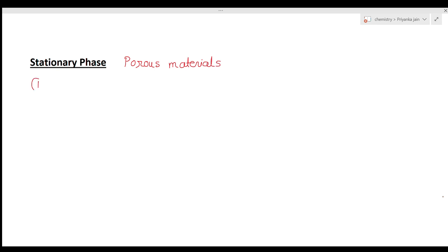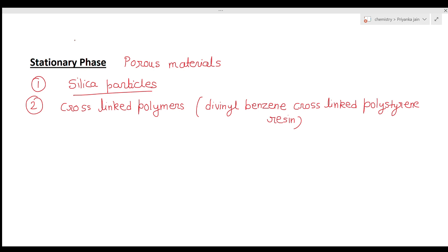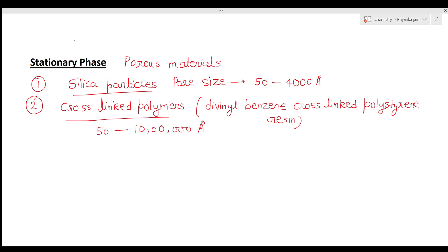There are two types of stationary phases used: one is porous silica particles, and the second is cross-linked polymers — specifically divinylbenzene cross-linked polystyrene resins. For silica particles, the pore size ranges from 50 to 4,000 angstroms, while for cross-linked polymers the pore size may range from 50 to 1,000,000 angstroms.